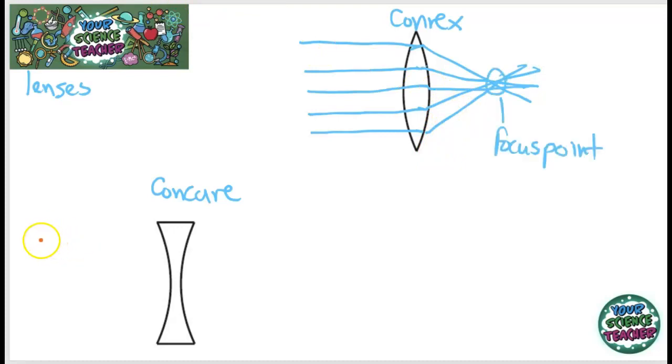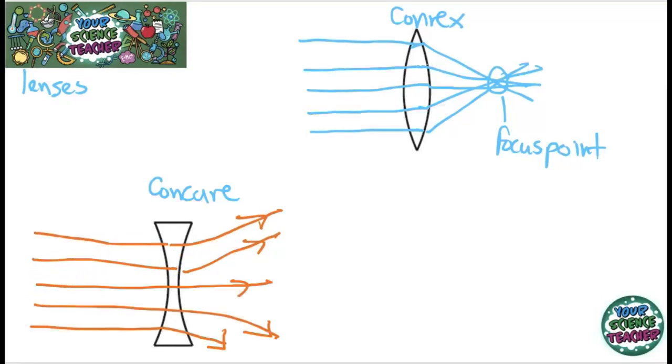Concave lenses, however, are known as diverging lenses. Because after they pass through the object, the ray diagrams, they spread out from one another. But why is all this important? What do we need to know about this? We need to be able to know what different images will look like when we look at them through a convex and a concave lens.